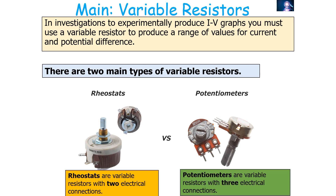Rheostats are variable resistors with two electrical connections, and potentiometers are variable resistors with three electrical connections.